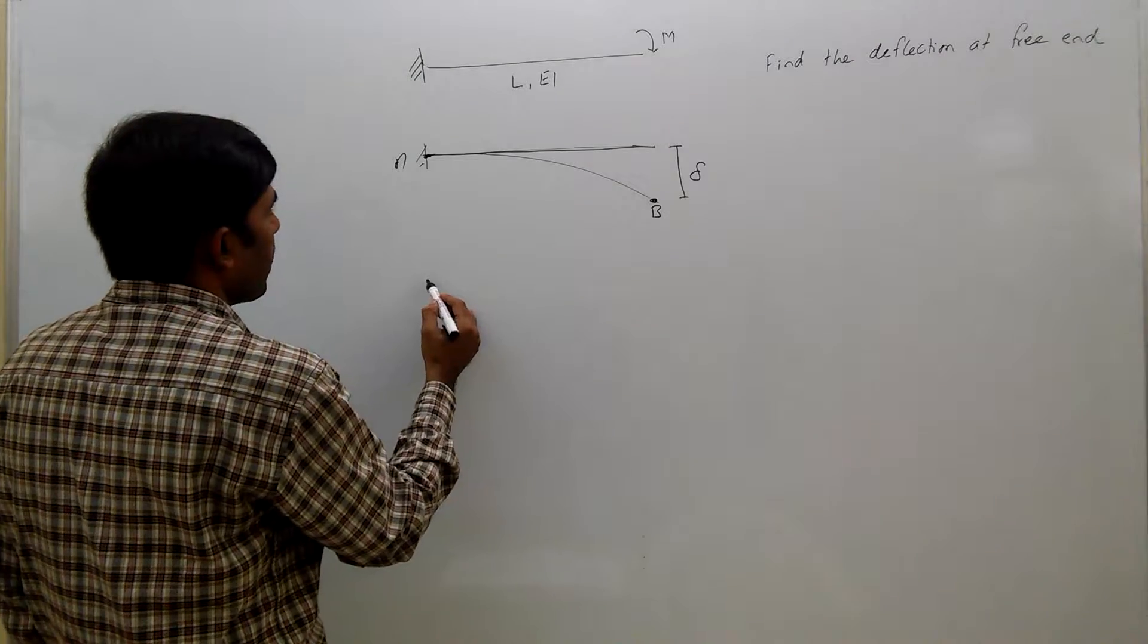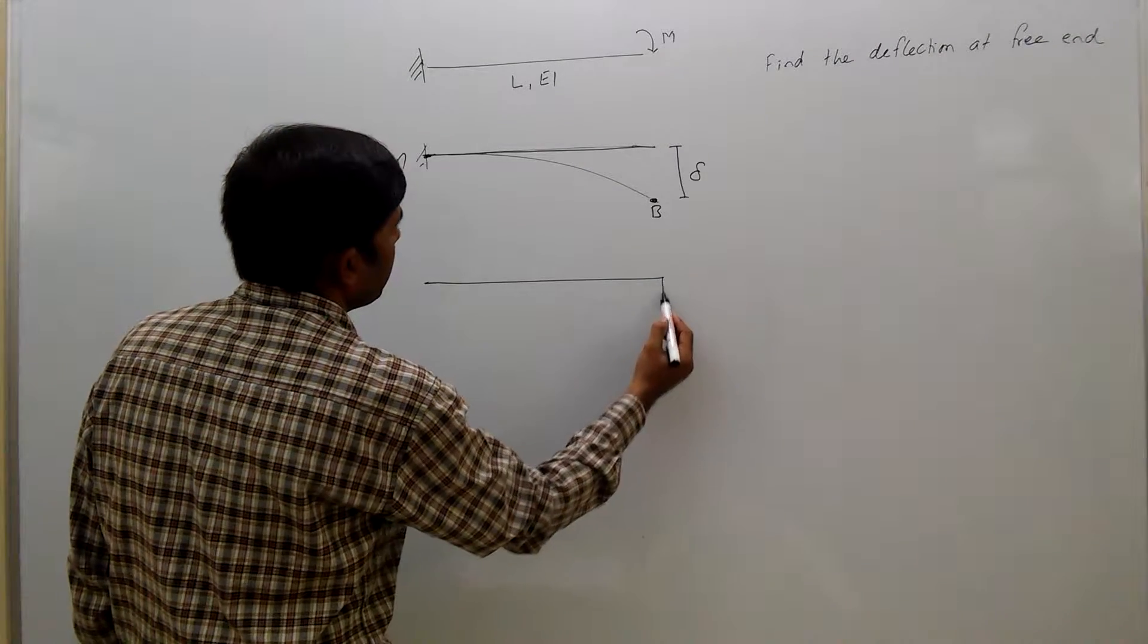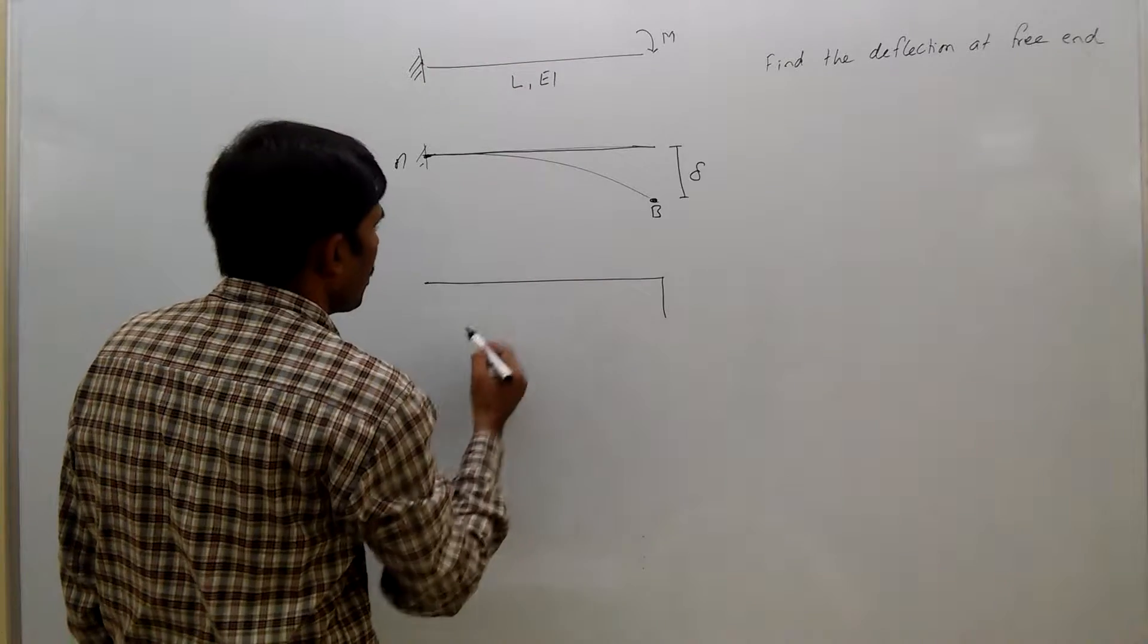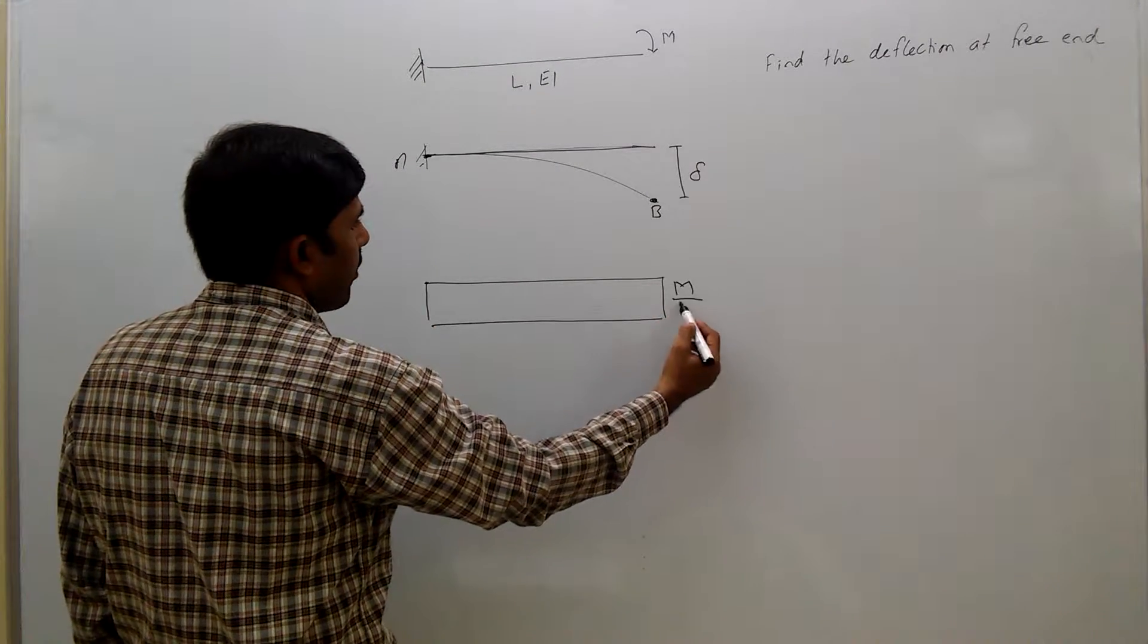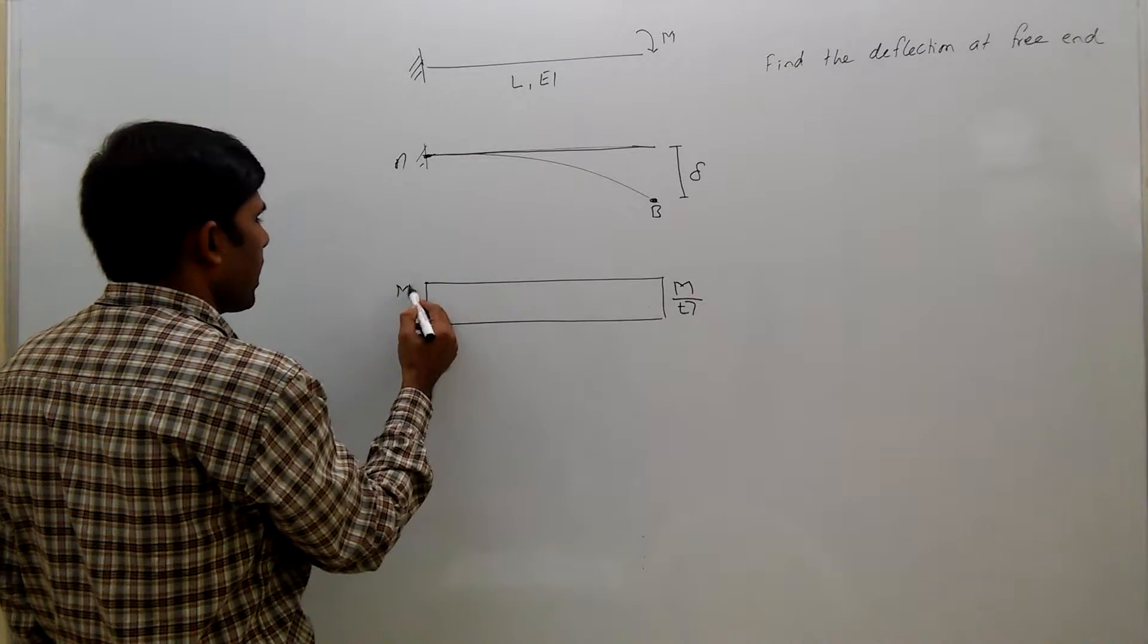First, we will draw the bending moment diagram. Bending moment is constant throughout the beam. This is the bending moment M throughout. If you divide that M by EI, we will get the curvature diagram directly.